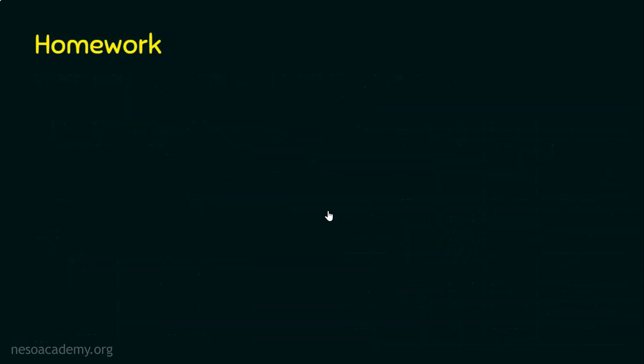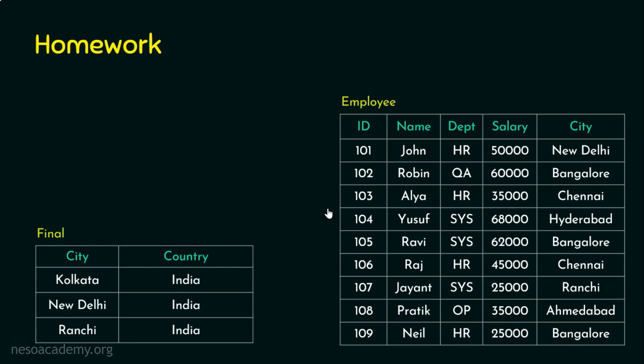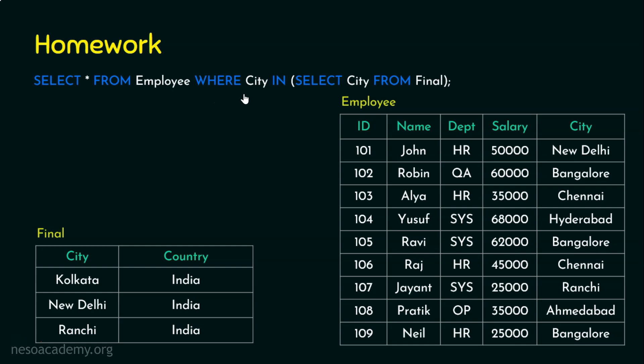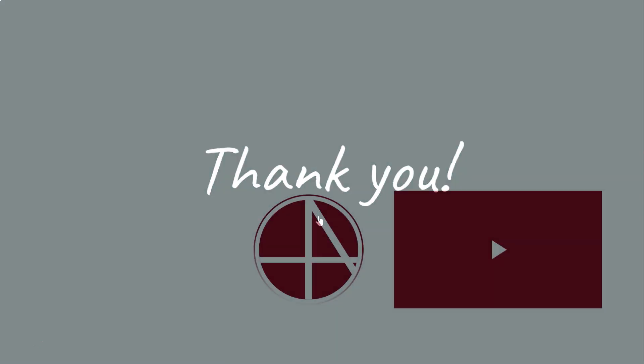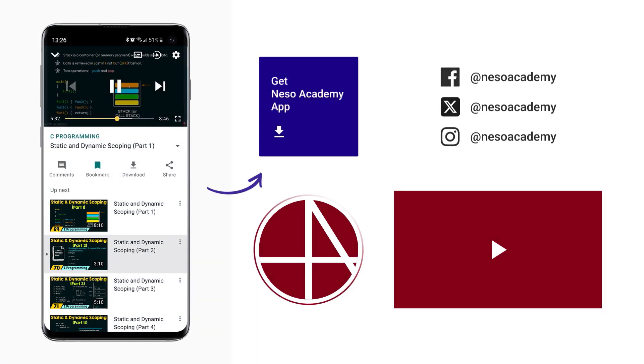For homework, I'm showing two tables — employee and final — and the query is: SELECT * FROM employee WHERE city IN (SELECT city FROM final). I've shown an output on screen. Please pause the video, check whether the output is correct or incorrect, and post your answers in the comment section. I hope you enjoyed this presentation — thank you for watching.